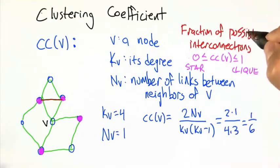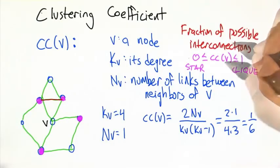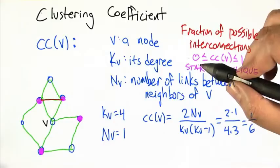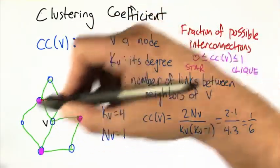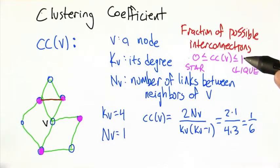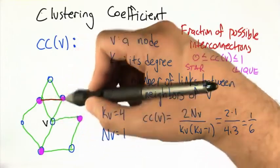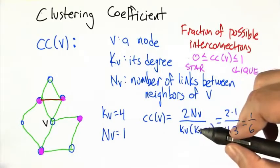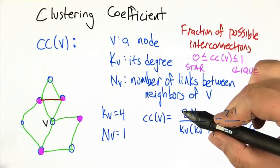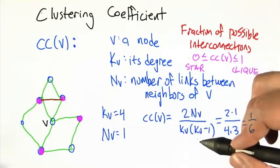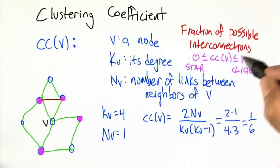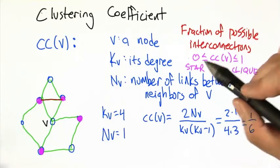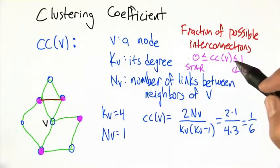What this represents is the fraction of possible interconnections between the neighbors of v. Because it's a fraction, we're expecting it to be something between 0 and 1. We can get 0 if we've got something like a star — v has edges going out, but none of those connect to each other. And it can be all the way to 1 if we have a clique, where v is connected to its neighbors and all the neighbors are connected to each other. k_v times k_v minus 1, all divided by 2, is the maximum number of connections among a set of nodes of size k_v. So we take the reciprocal of that, multiply it by n_v, and that gives us the fraction we're looking for. So in this case, v is one sixth of the way from being a star to being a clique — it's not that tightly connected.